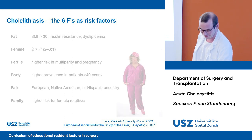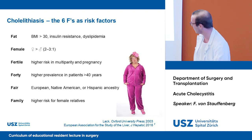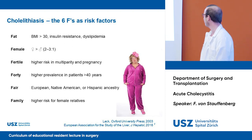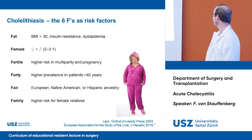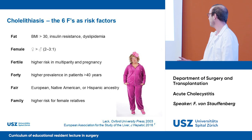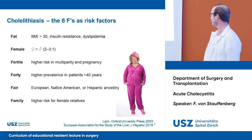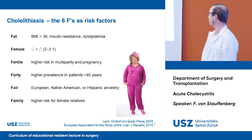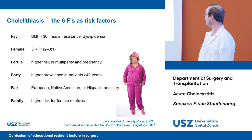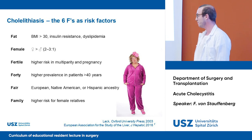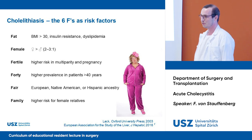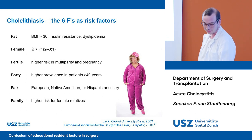That's right. Here we have a typical patient for the six Fs. She might have a BMI around 30, she's female, she might be fertile and around her 40s, she's fair, and she might have a family history for cholelithiasis.